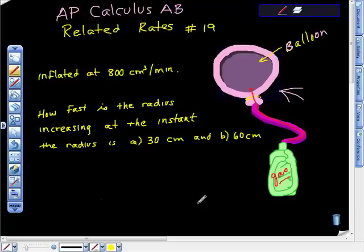AP Calculus AB related rates problem number 19. We have a spherical balloon that is being inflated at a rate of 800 cubic centimeters per minute. The question we're supposed to answer is: how fast is the radius increasing at the instant the radius is 30 centimeters, and then the second question, 60 centimeters?